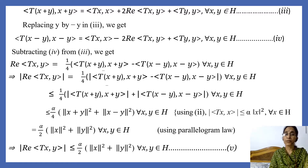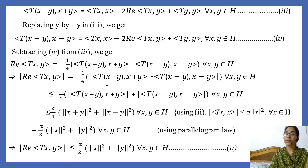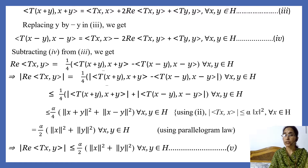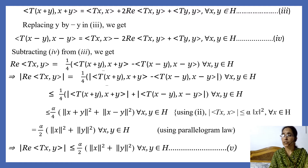Replacing y by −y in equation (3): ⟨T(x−y), x−y⟩ = ⟨Tx,x⟩ − 2·Re⟨Tx,y⟩ + ⟨Ty,y⟩, since T(−y) = −Ty by linearity, and the inner product gives a sign change producing +2·Re⟨Tx,y⟩ becoming −2·Re⟨Tx,y⟩. We label this equation (4).